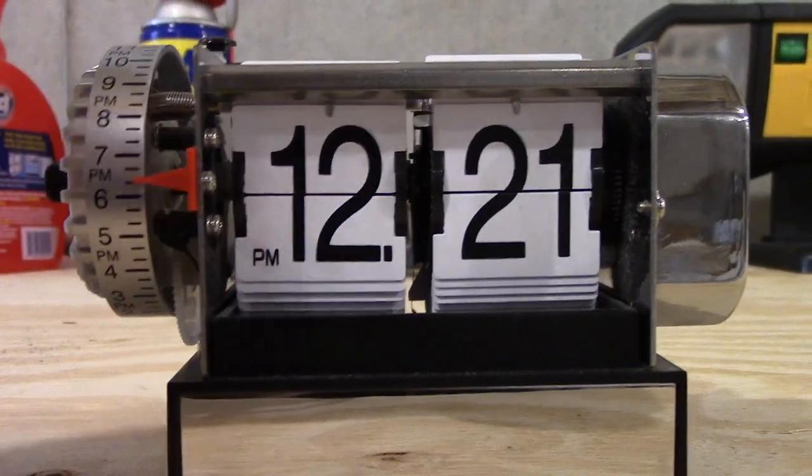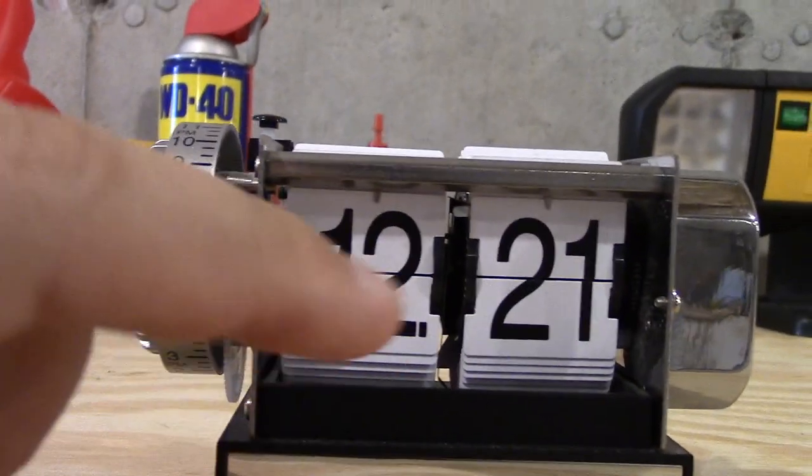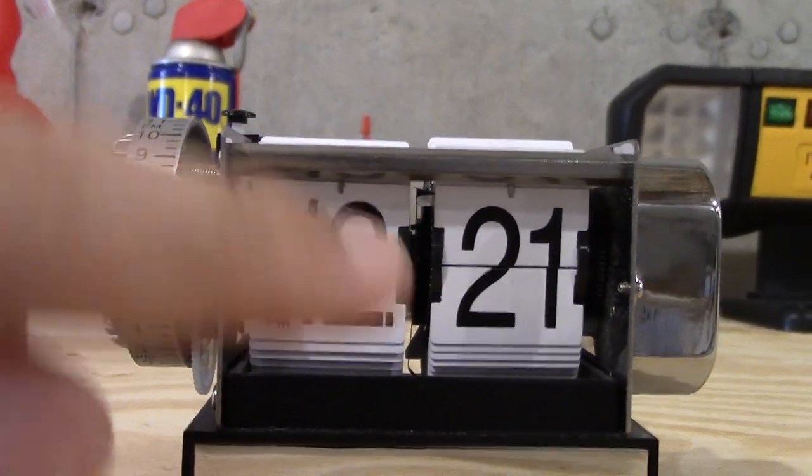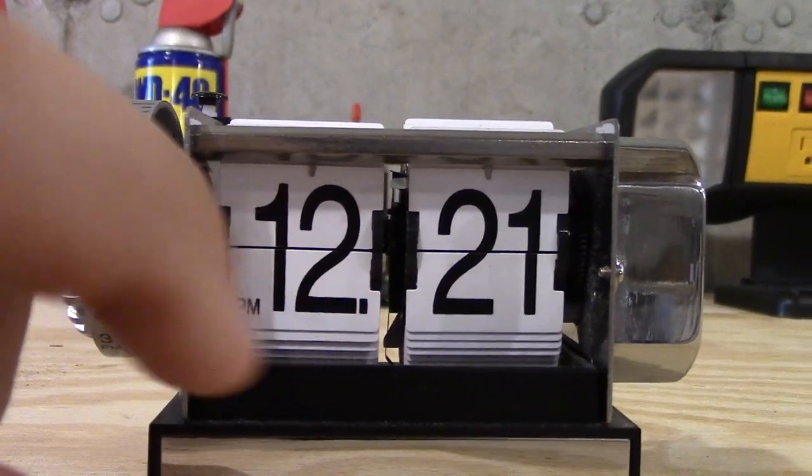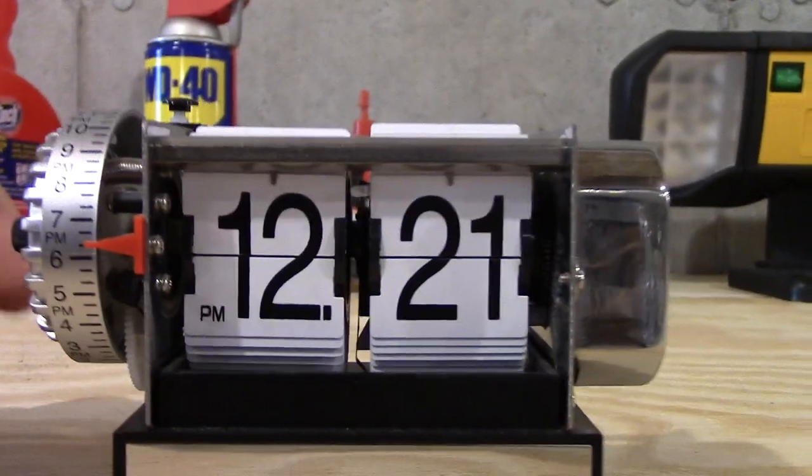But as you can see, it still has a 12 because, obviously, at some point, the hour tile has to clear the tab. And then it just keeps the same number, so it holds the correct time. Simple enough.